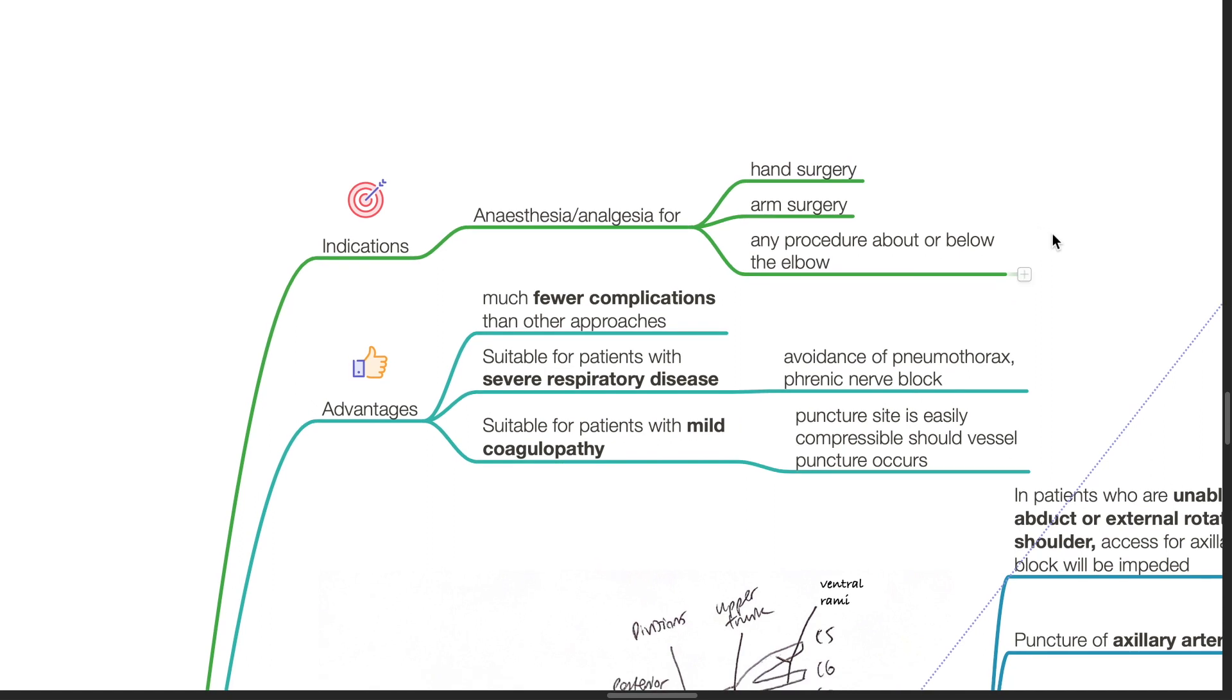Advantages of the axillary block: there are much fewer complications compared to other approaches. It is suitable for patients with severe respiratory disease. It avoids the risk of pneumothorax and phrenic nerve block. It is suitable for patients with mild coagulopathy. The puncture site is easily compressible should vessel puncture occur.